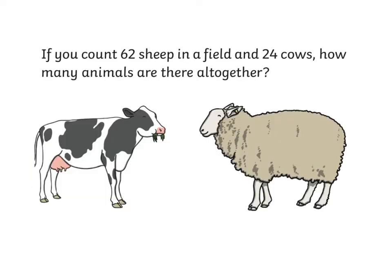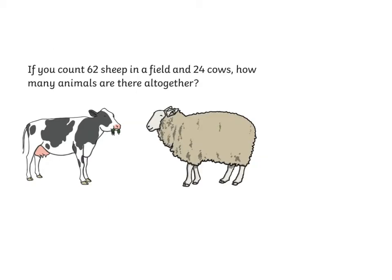This problem says, if you count 62 sheep in a field, and 24 cows, how many animals are there altogether? If we remember that when we see the word 'altogether' in a word problem, that usually means we're going to add. So with this problem, we would go 62 plus 24, and then work out the answer.